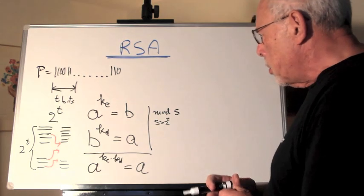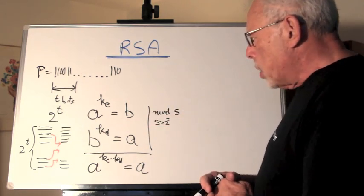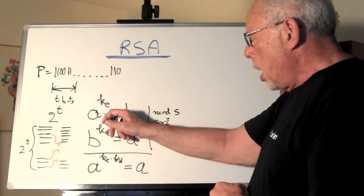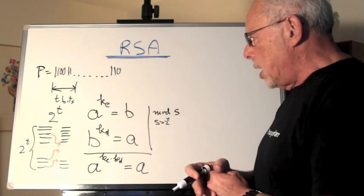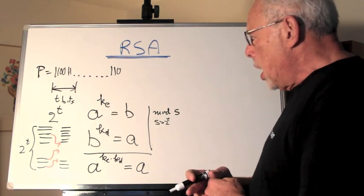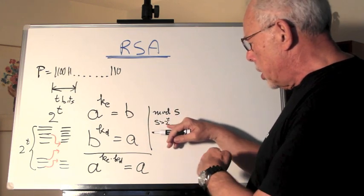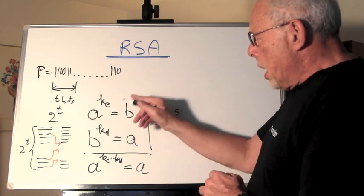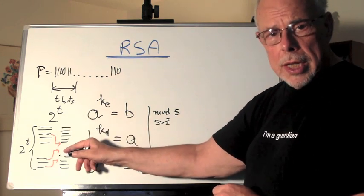And we figured out that if we use modular arithmetic, we can have A, which is a number that represents one of these possibilities, raise it to a number which is KE, the encryption key, and in a modular S, where S is a number that is bigger than 2 to the power of T, and get another number B, which will be one of the numbers here.